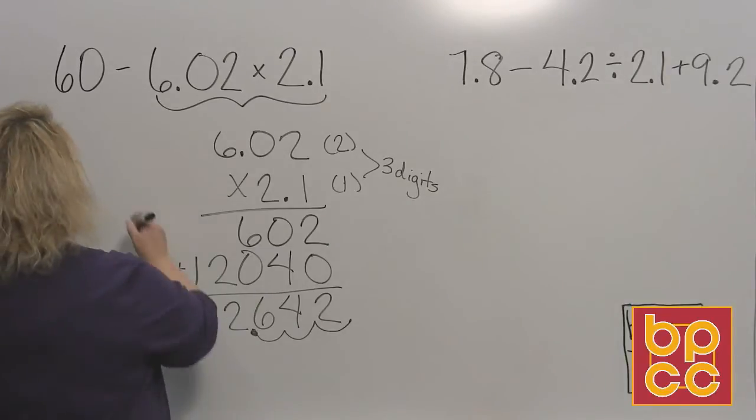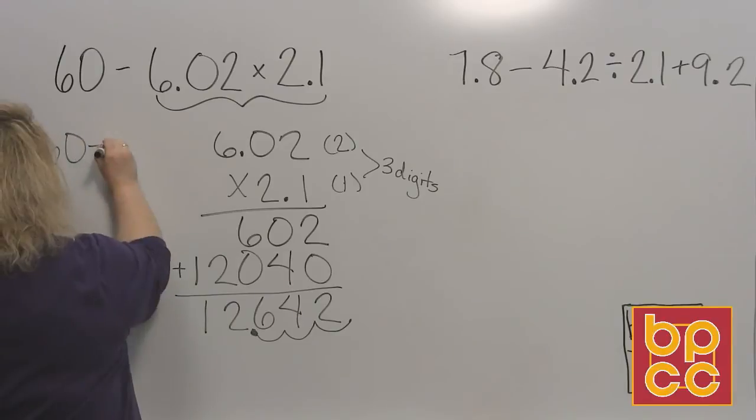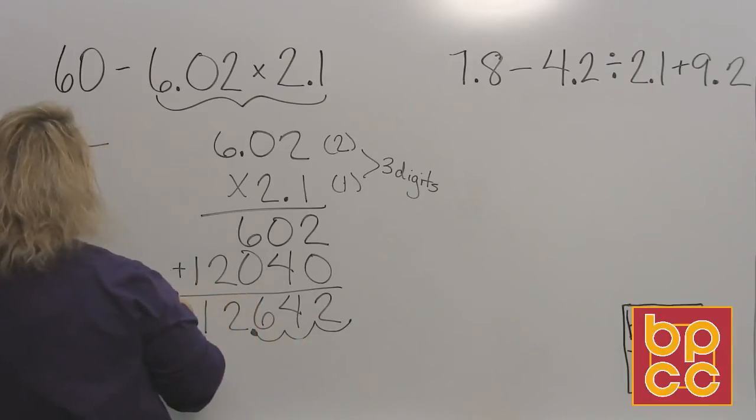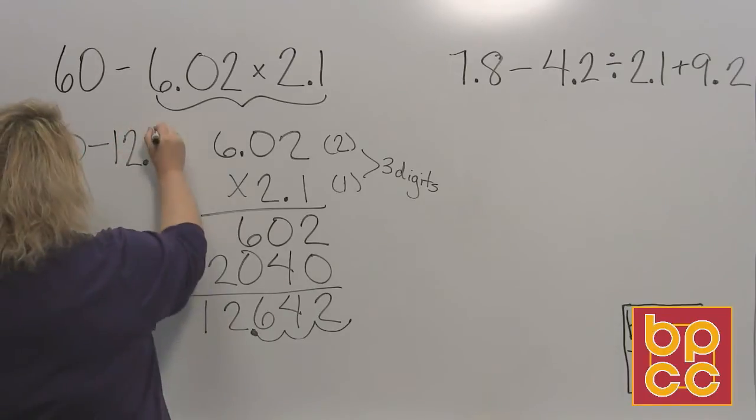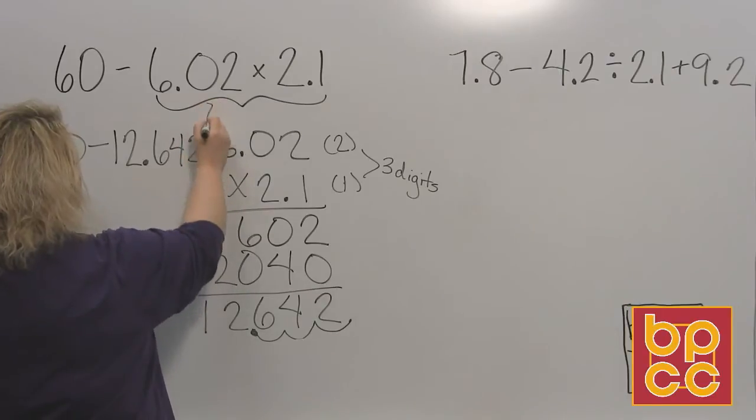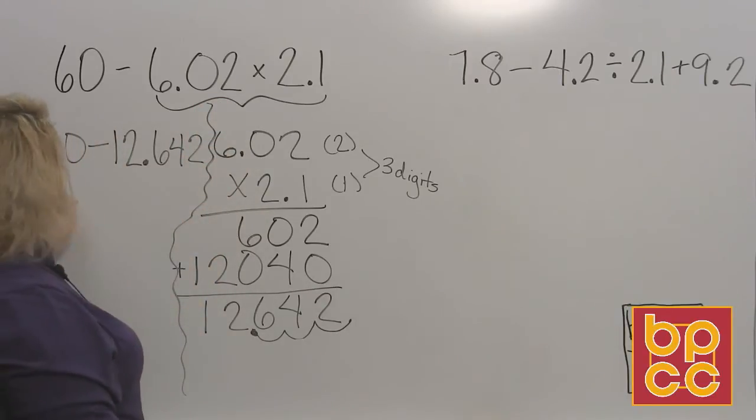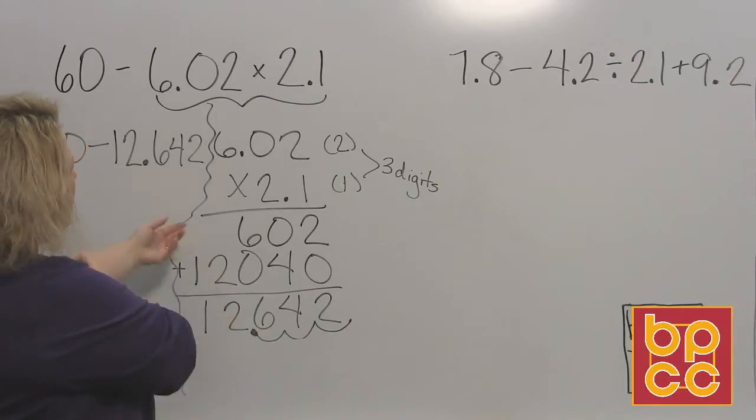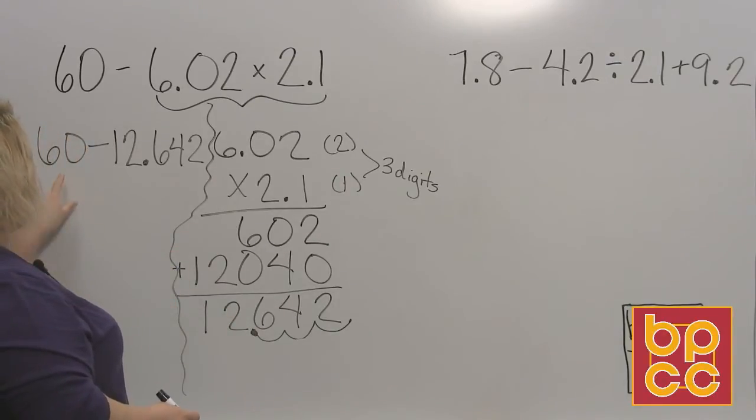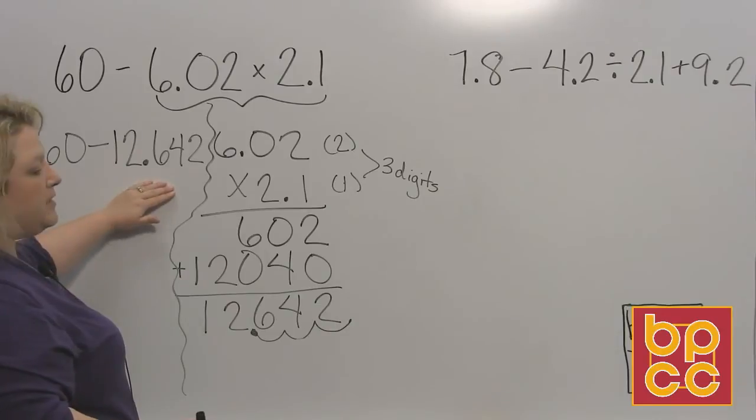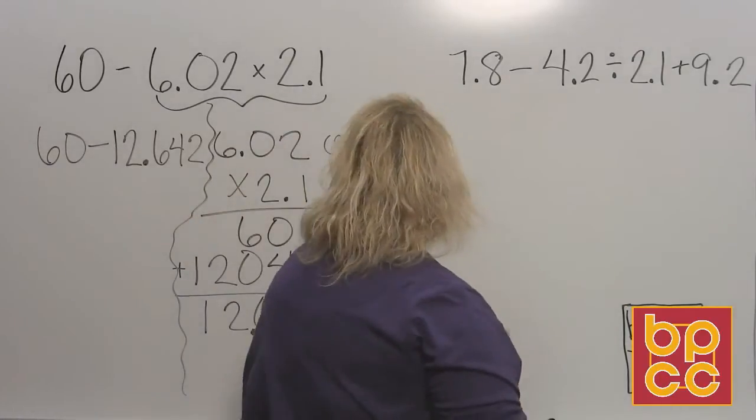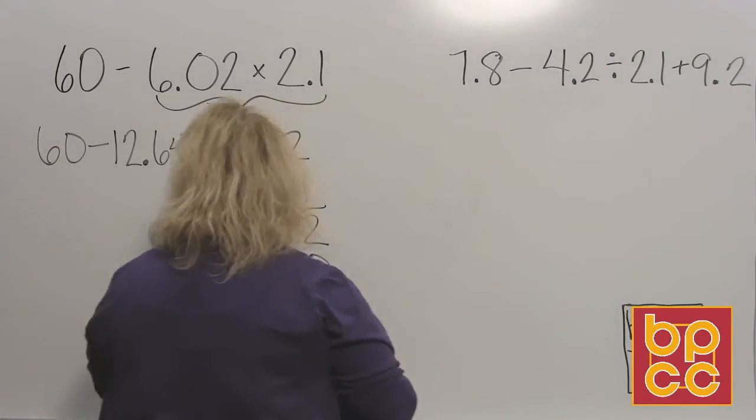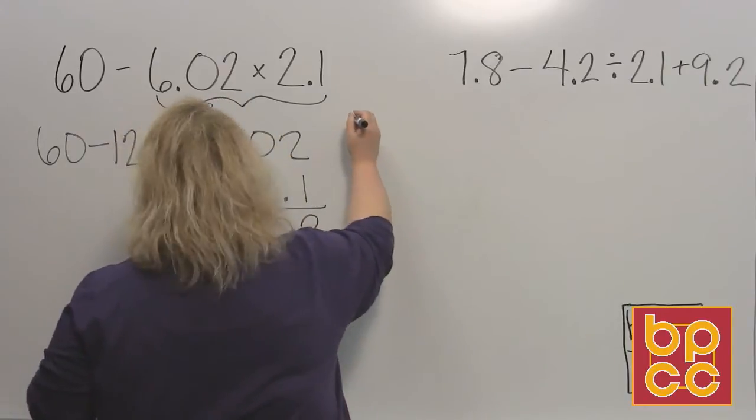So now I have 60 minus this big number, which I'm going to write 12 and 642 thousandths. Okay? So that's what I'm fixing to subtract. Now when we did subtracting decimals, you have to remember that this is the whole number 60, like $60. And so in order to subtract a decimal from a whole number, we need to add decimal places to this. So I'm going to erase this a little bit so that I can add my decimal places. That would be 60. And I need one, two, three numbers.